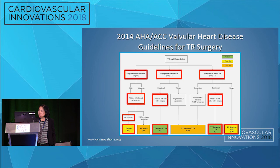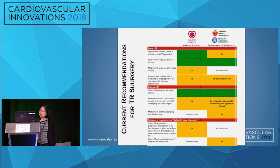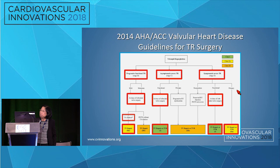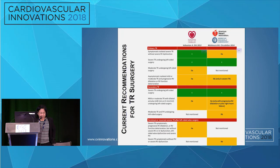There are also class IIA indications: progressive functional — that's secondary tricuspid regurgitation — at the time of left heart surgery with tricuspid annular dilatation, with specific cutoffs. For primary disease, there are indications in the setting of severe symptoms. But overall, only two class I indications and both are at the time of left heart surgery. There are only two class IIA or B indications for isolated tricuspid valve repair or replacement, and the level of evidence is poor.